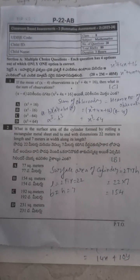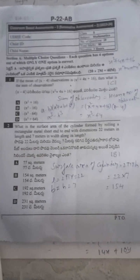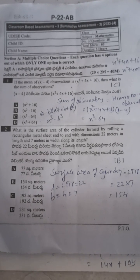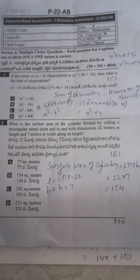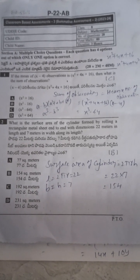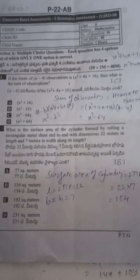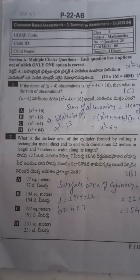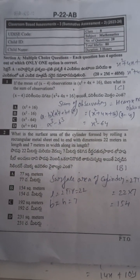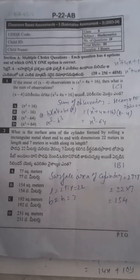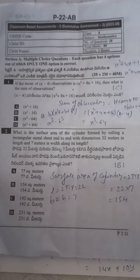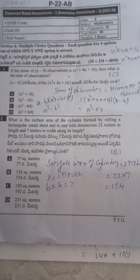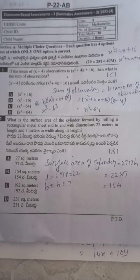Hi, welcome back to our YouTube channel. The topic is CBA3 SA2, 8th class math. First question: if the mean of x minus 4 observations is x squared plus 4x plus 16, then what is the sum of observations? Sum of observations formula is mean into number of observations, so mean into x squared plus 4x plus 16.